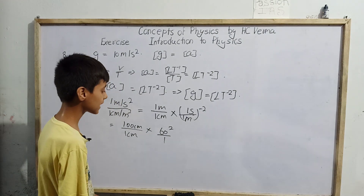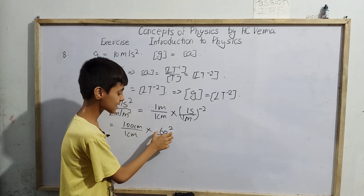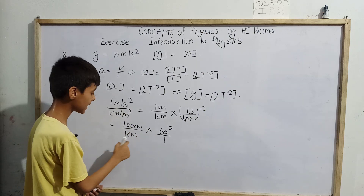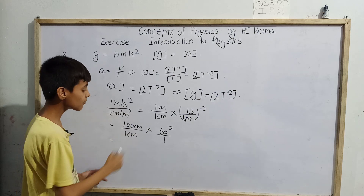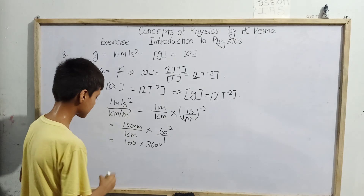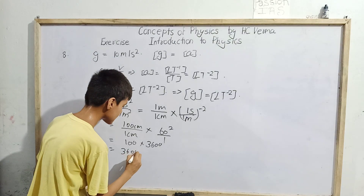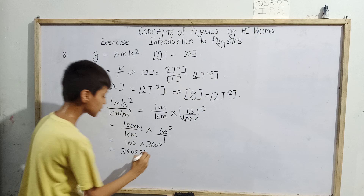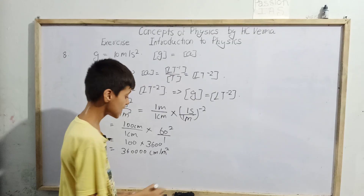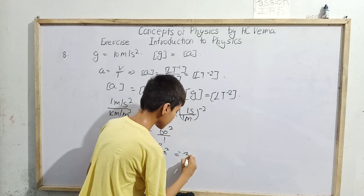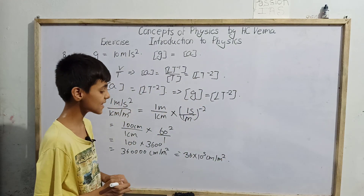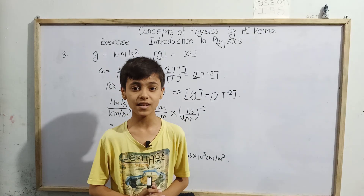So we have 60 squared by 1, which equals 60 squared = 3600. Therefore the result is 100 multiplied by 3600, which equals 3,60,000. So 1 meter per second square equals 3,60,000 centimeter per minute square, and for 10 meters per second square the final answer is 36 × 10⁵ centimeter per minute square. So this was my today's topic. Thank you.